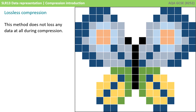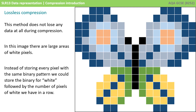Another approach is not to lose any data at all. This is known as lossless compression and it uses completely different algorithms. For example, in our original image of a butterfly, we can see that there are large areas of white pixels. Instead of storing every pixel with the same binary pattern, we could encode our data differently, perhaps by storing the binary for the colour white and then the number of white pixels in a row before the colour changes.